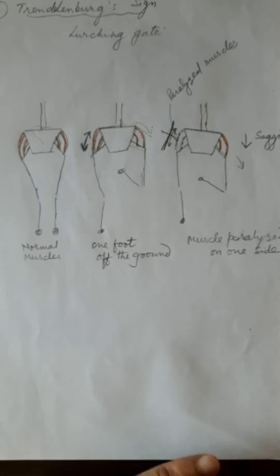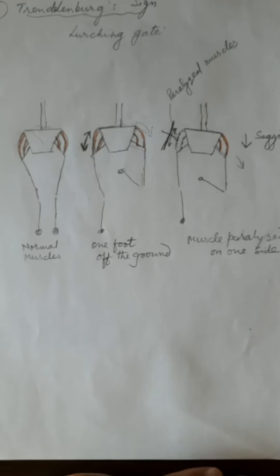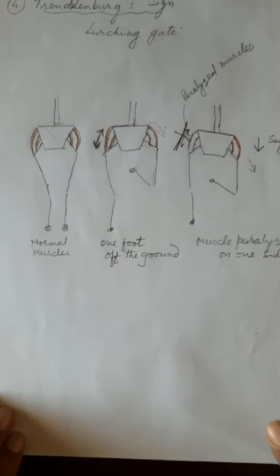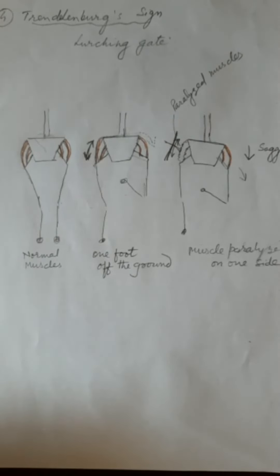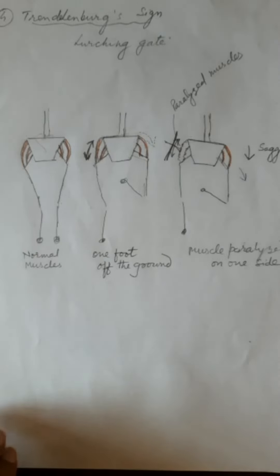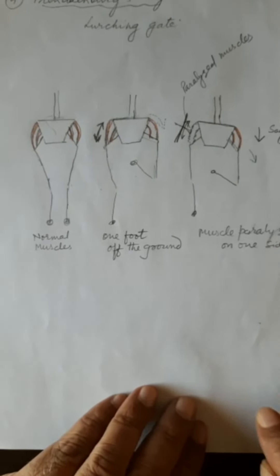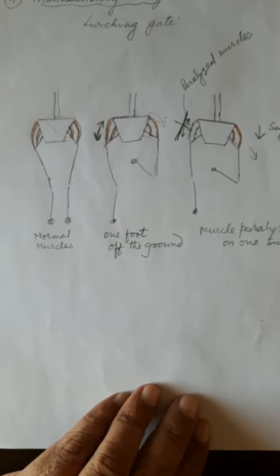This completes your answer to the question: what is the Trendelenburg sign and why does it become positive. For that, it was necessary to explain the origin, insertion, nerve supply, and action of the two abductor muscles of the hip — gluteus medius and minimus. Thank you very much for watching this video.